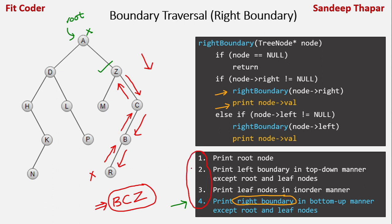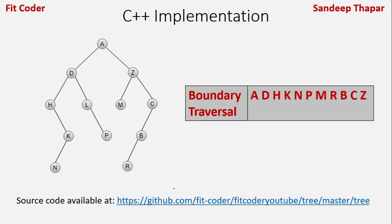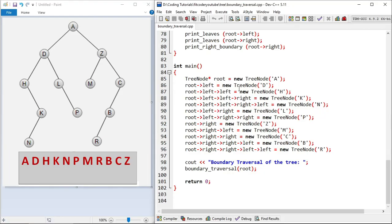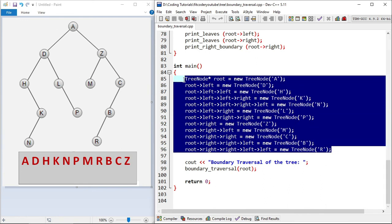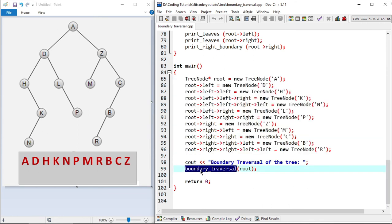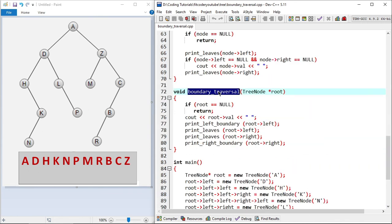The time complexity of boundary traversal is O(N), where N is the number of nodes in the tree. Now let's look at the implementation. All source code is available in my GitHub repository, link in the description. In the main function I've created the tree with root node A and initialized all nodes, then called the boundary traversal function passing the root.